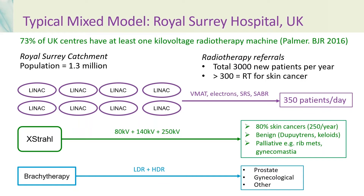There was also an Xstrahl machine which delivers three energies — 80 kV, 140 kV, and 250 kV. This machine treated 80% of the skin cancers, about 250 patients per year, as well as benign conditions such as Dupuytren's disease and keloids, and also palliative conditions, for instance rib metastases and gynecomastia. There was also a brachytherapy service used mainly for prostate and gynecological indications.